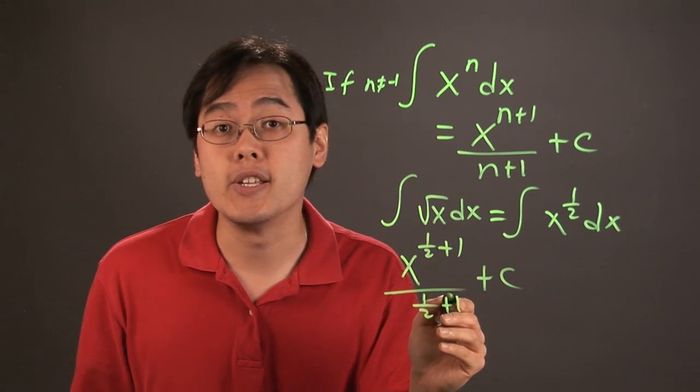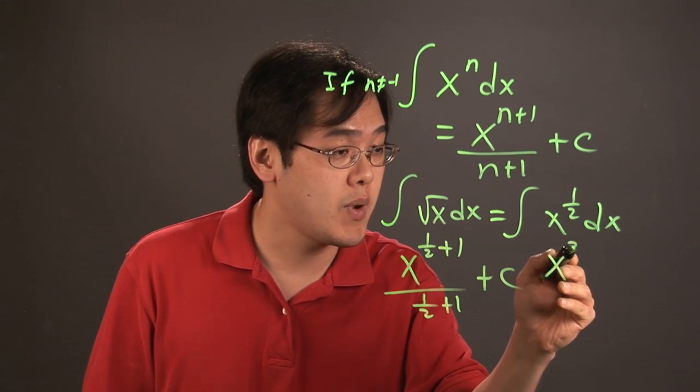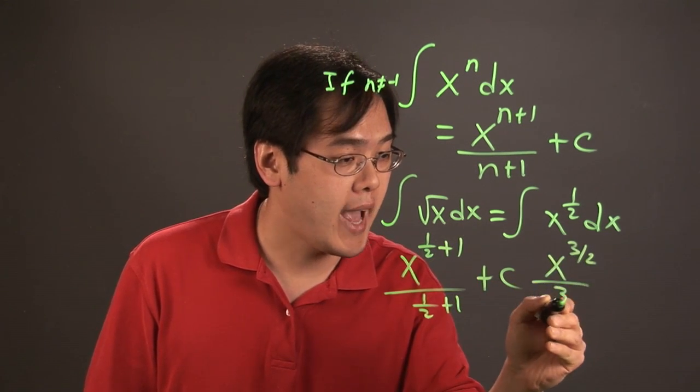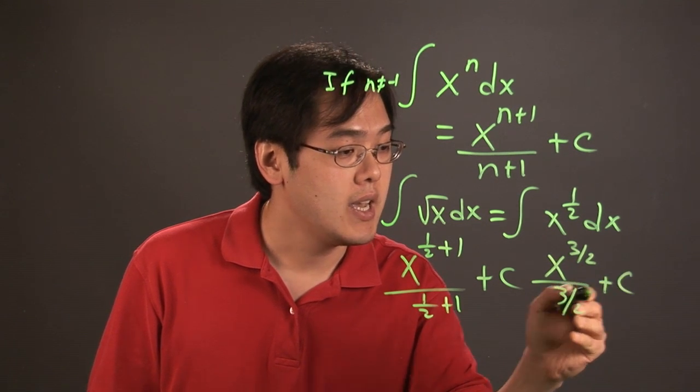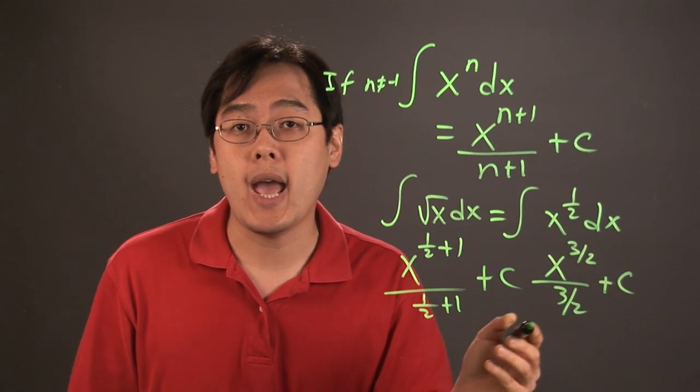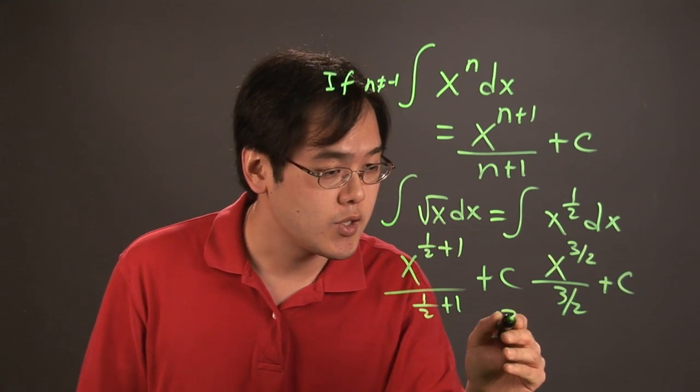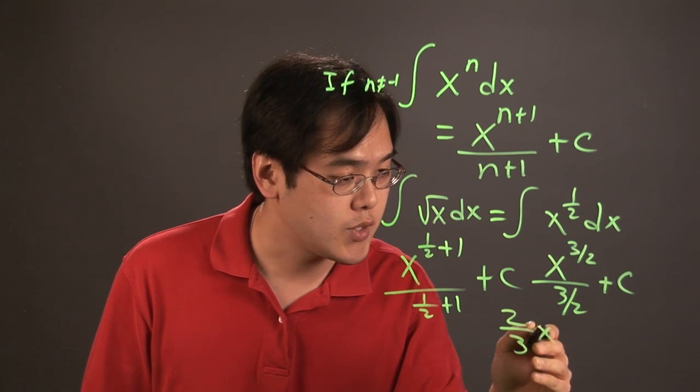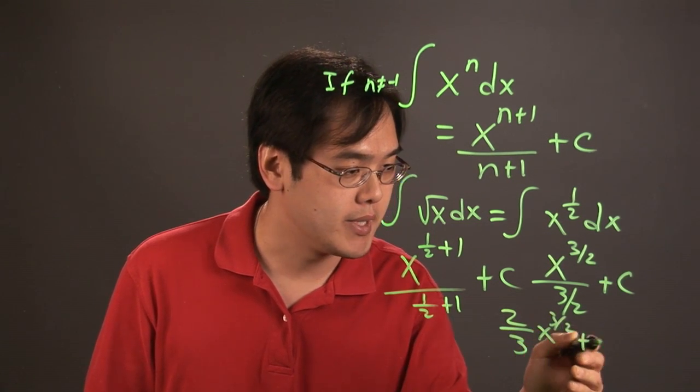Now, 1 half plus 1 is 3 halves. So this would be x to the 3 halves over 3 halves plus c. And as you know, if you're divided by 3 halves, you're really multiplying by 2 thirds. So this would be 2 thirds x to the 3 halves plus c.